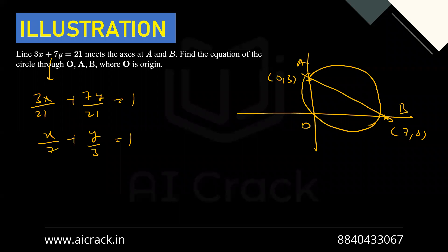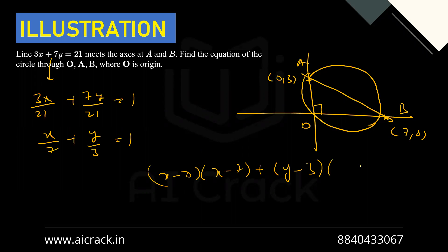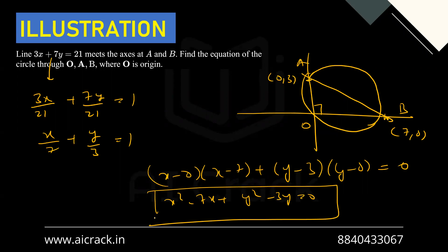We need to find the equation of the circle through O, A, and B where O is the origin. Since the coordinate axes meet at 90°, and the origin lies on the circle, AB is the diameter. Using the diameter form: (x − 0)(x − 7) + (y − 3)(y − 0) = 0, which simplifies to x² − 7x + y² − 3y = 0. That concludes today's lecture — tomorrow we'll cover more concepts and properties of circles.